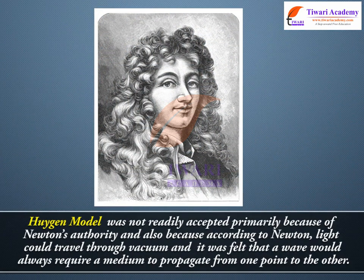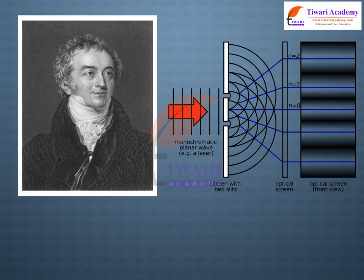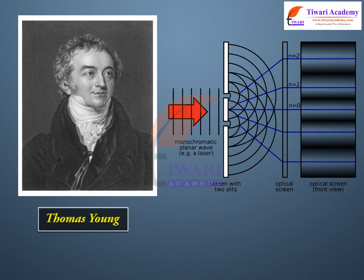Huygens' model was not readily accepted primarily because of Newton's authority, and also because, according to Newton, light could travel through vacuum and it was felt that a wave would always require a medium to propagate from one point to the other. This confusion was cleared when Thomas Young performed his famous interference experiment in 1801, and it was firmly established that light is indeed a wave phenomenon.